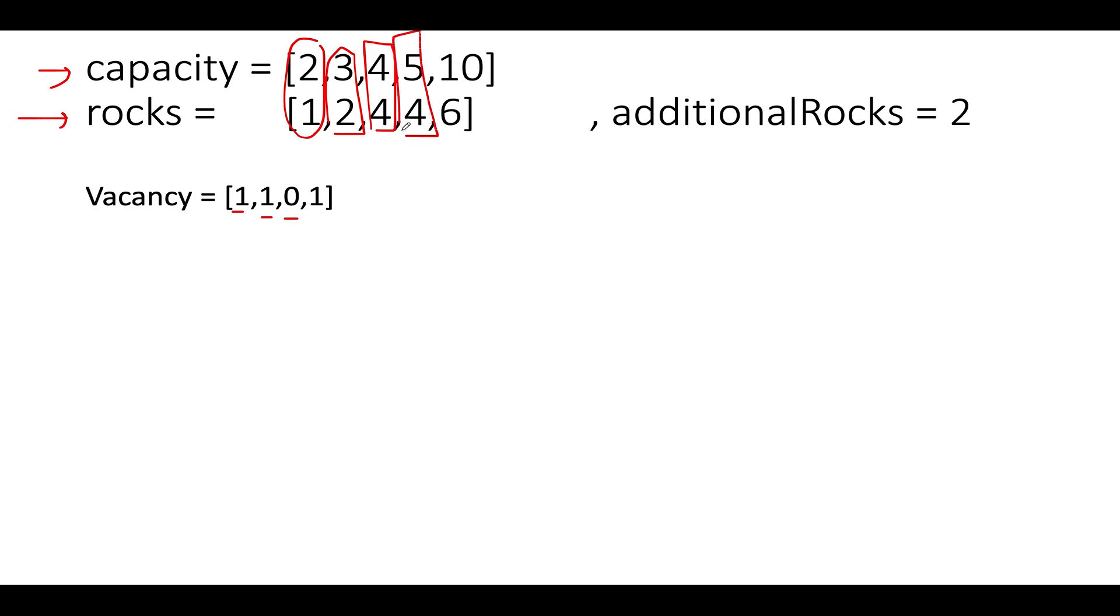What is the vacancy of this particular bag? It's one. I have written one here. And what is the vacancy of this particular bag? It is 10 minus 6, which is four. So the last element in the vacancy array turns out to be four. Now once you have created this vacancy array, what do you do? You sort this array. So let's go ahead and sort this. So the array gets sorted to something like this: 0, 1, 1, 1 followed by four.